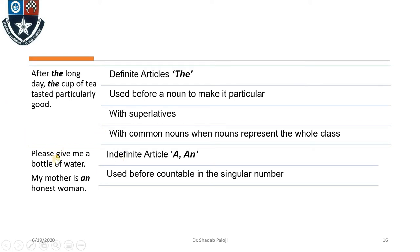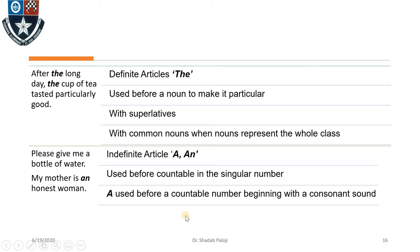Indefinite articles can be used before countable nouns in the singular number. 'A bottle of water' — water is a singular thing. 'My mother is an honest woman' — woman is a singular noun. 'A' is used before a countable noun beginning with a consonant sound. Any word starting with an alphabet other than A, E, I, O, U is a consonant. Any word starting with A, E, I, O, U is a vowel. Sometimes the sound of a vowel also makes it a vowel word.